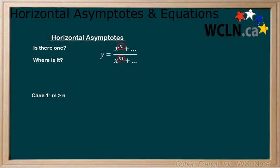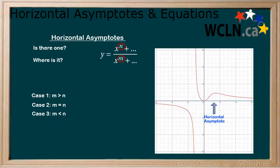First, where the highest power is in the denominator. Second, where the highest powers in the numerator and denominator are equal. And third, where the highest power is in the numerator. Horizontal asymptotes are used to describe end behaviour. Unlike vertical asymptotes, a function may cross the horizontal asymptote before approaching it as part of the function's end behaviour. We can see this occurring in the following example.